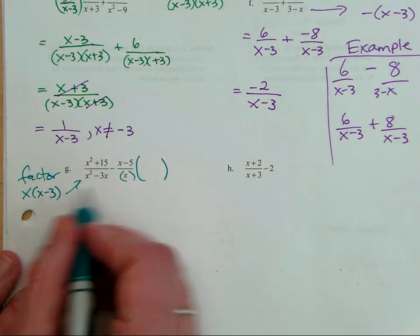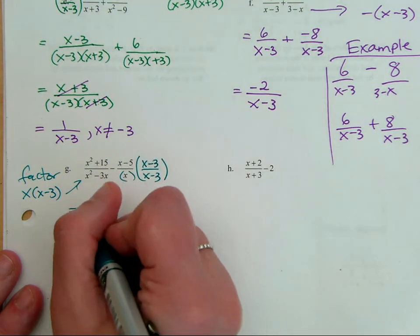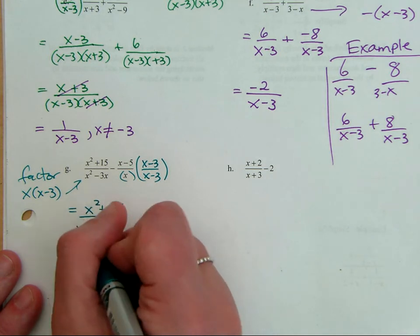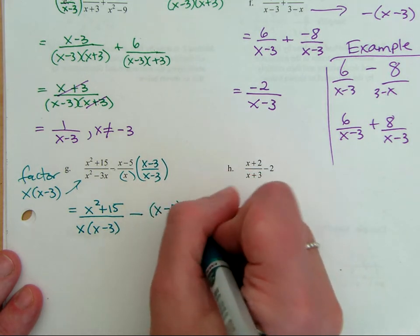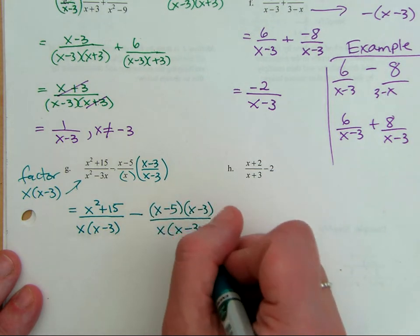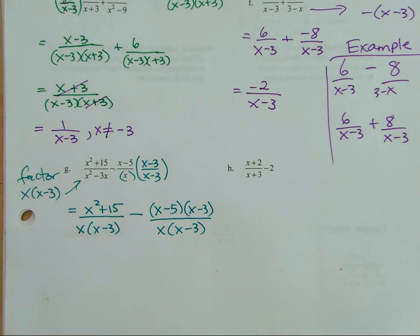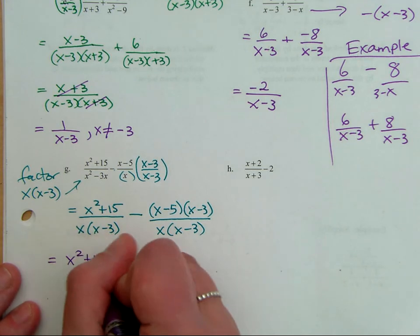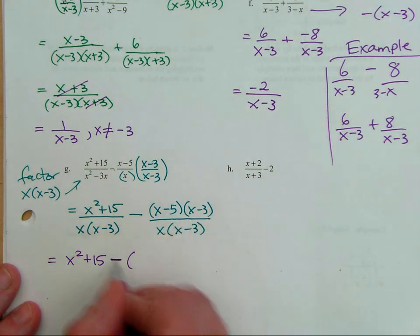What is this fraction missing that the other one has? It needs an X minus three. So here we have X squared plus 15 over X times X minus three, minus — I'm going to put these in parentheses — X minus five times X minus three. Do you see why I would want to put that in parentheses? Now that I have a common denominator, I can add the numerators, and in order to do that I'm going to have to FOIL or distribute.